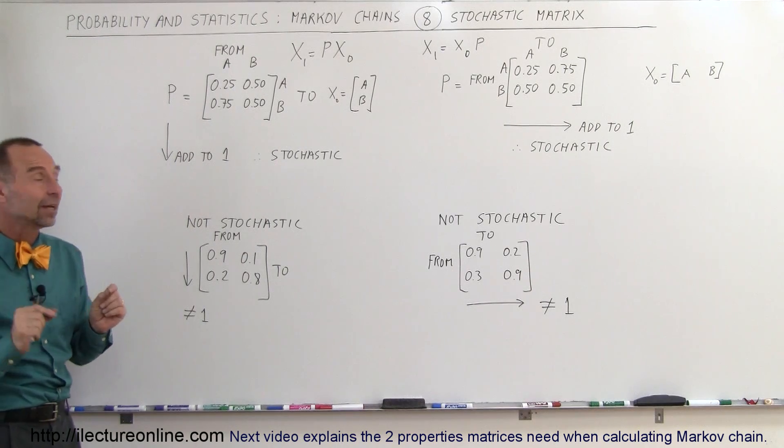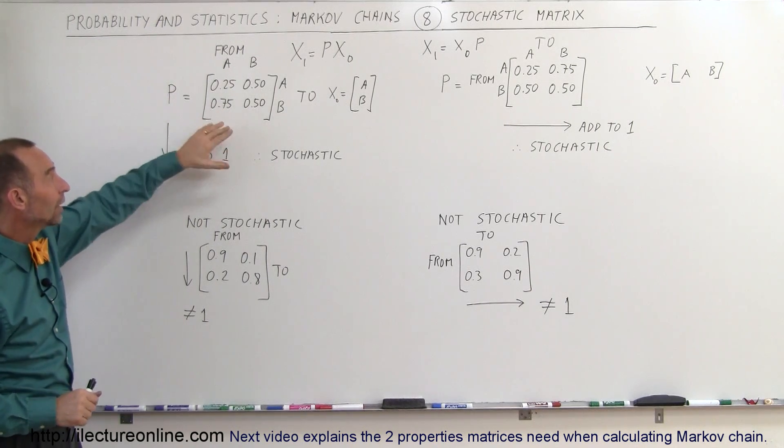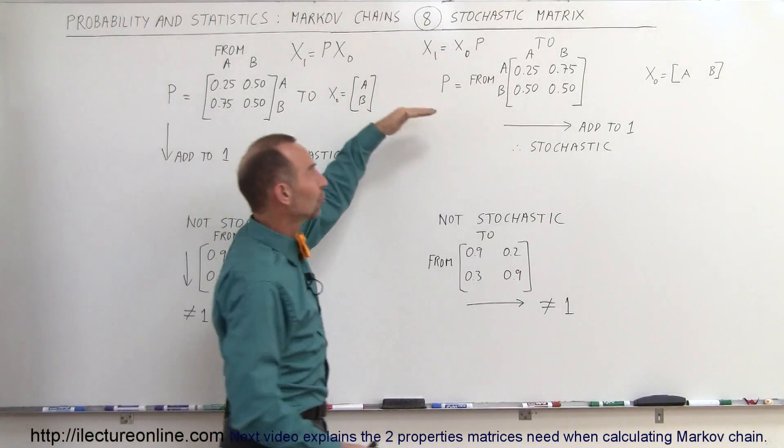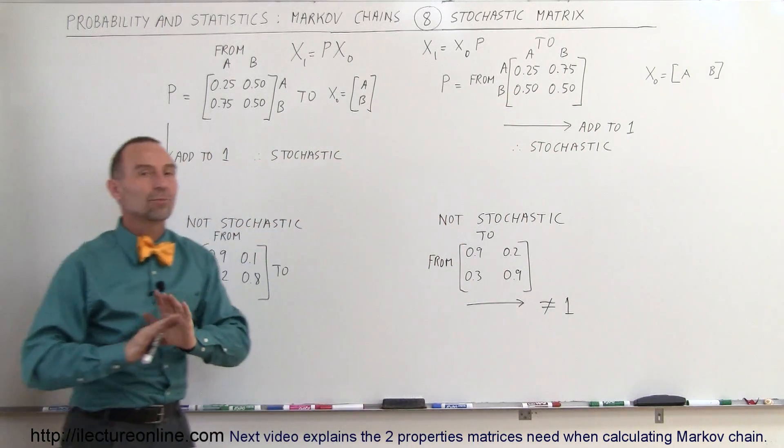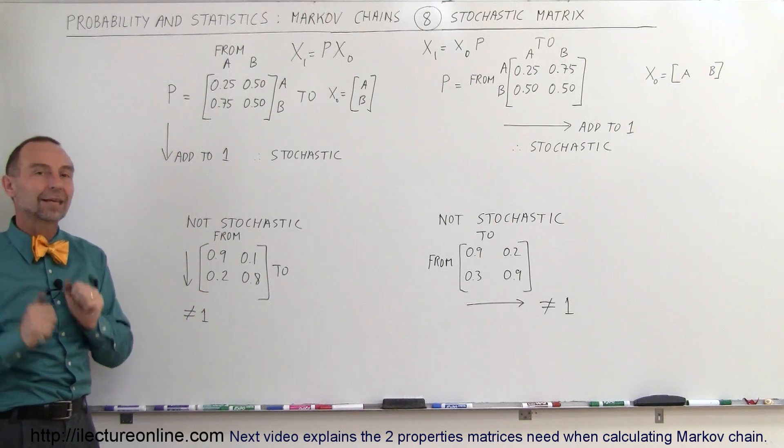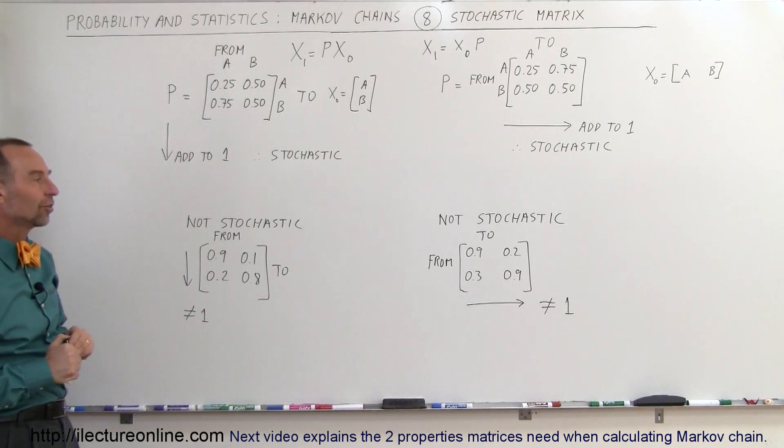So make sure that you always check that the numbers vertically add up to 1 if you use this method and the numbers horizontally add up to 1 if you use this method, or the matrix is not valid and your Markov chain cannot work out, you cannot get the right value, not get the right results that way.